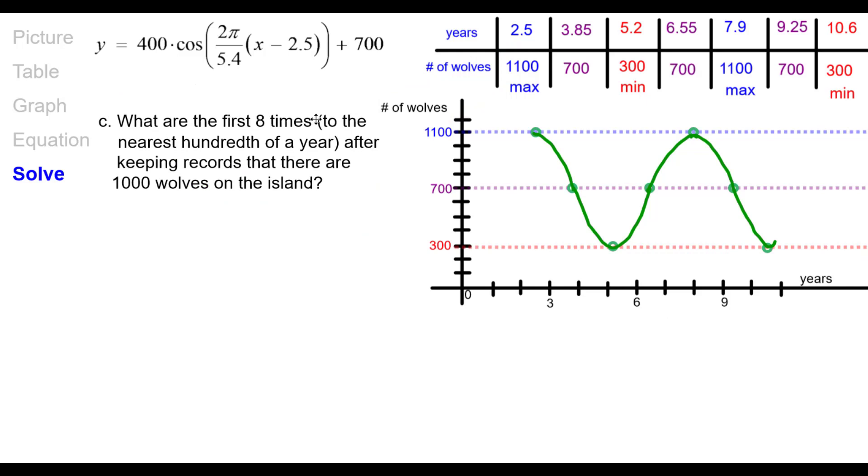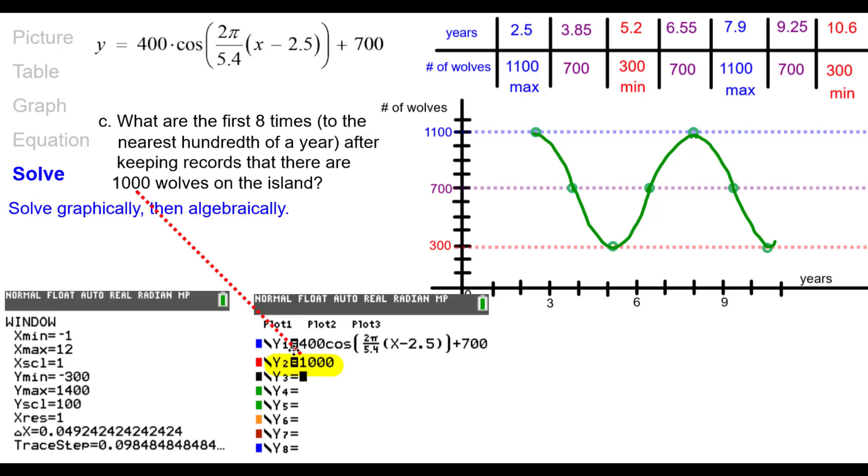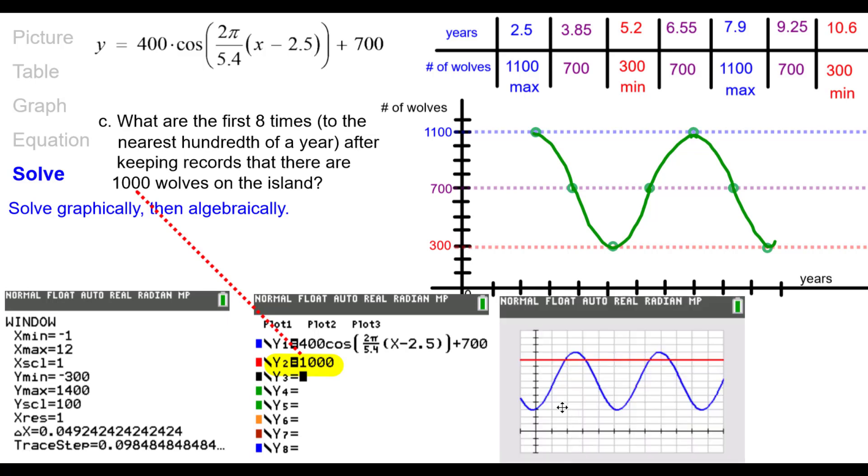Last question. What are the first eight times to the nearest hundredth of a year? After keeping records, are there a thousand wolves on the island? So we're going to solve graphically and then use algebra as well. So I've got the window. I've got this. I'm going to now graph on the same pair of axes the line y2 equals 1000. And it's going to be in red. And you can see that it intersects in one, two, three, four places. We want eight, but it's okay. We'll be okay. We could have extended it out, but we'll be fine. So what we're going to do is find the coordinates of these first two points of intersection. And then I'll show you what we're going to do after that. Let's go ahead and find the coordinates of the first two intersection points.